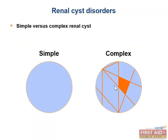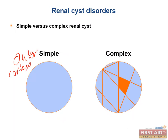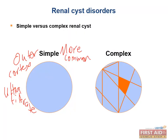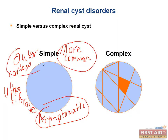Simple cysts are usually found in the outer cortex and are filled with ultrafiltrate. They are very common, accounting for the majority of all renal masses. They're usually found incidentally and are typically asymptomatic.